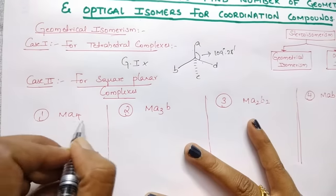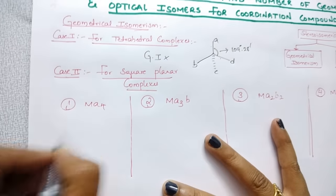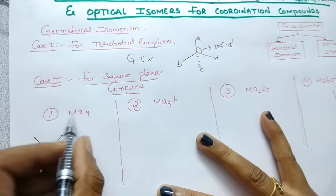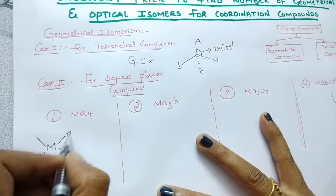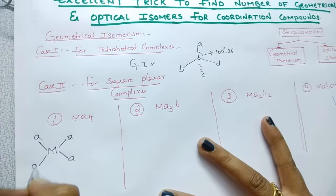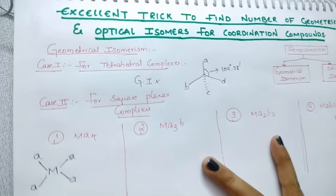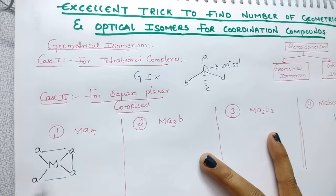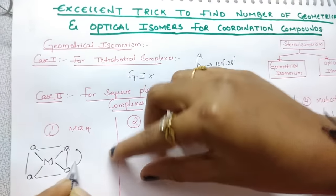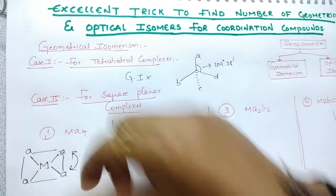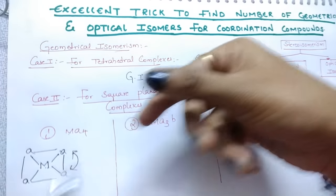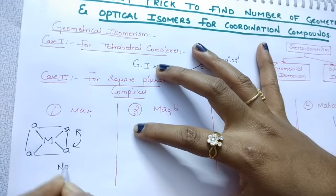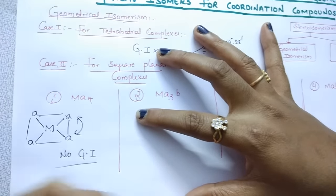Now see for square planar complexes. First one is MA4. Draw the structure with the metal at the center and 4 ligands. For MA4, all ligands are the same. When you flip these two, we get the same structure because here also A, here also A. There is no GI for MA4.